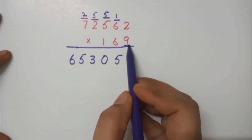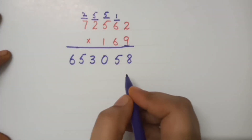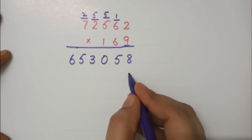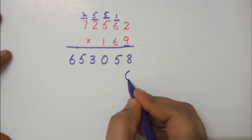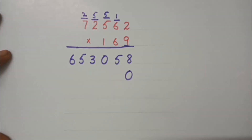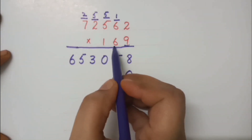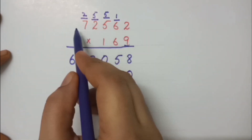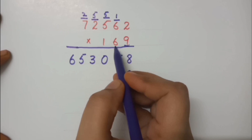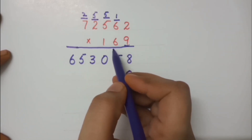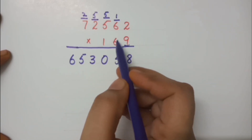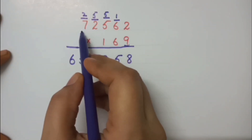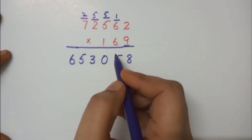When we complete the multiplication of the first digit, for the second digit's multiplication we have to write a zero at the ones place. This is so we can start the next digit's multiplication. Multiplication with 9 is complete. Now we start multiplication with 6 — we will multiply 6 with 2, then 5, then 2, then 7.